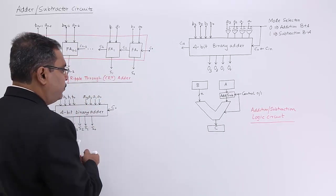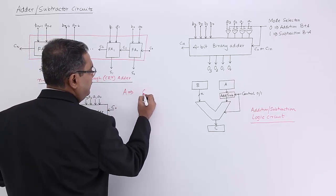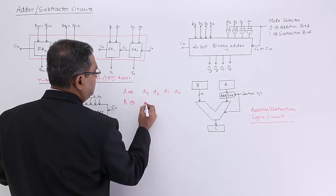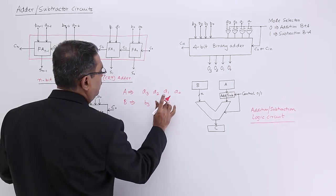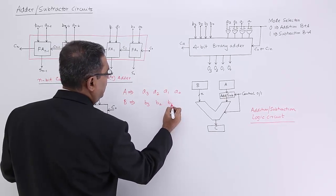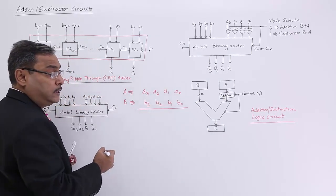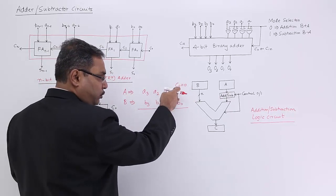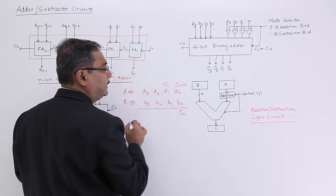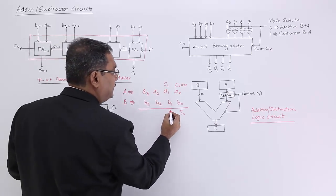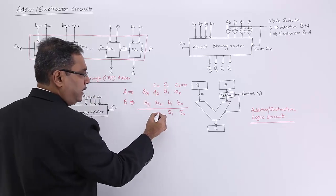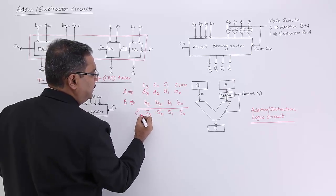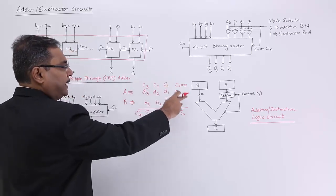As an example, let us suppose I am having one number A, which has four bits: A3, A2, A1, and A0. We are having another number B, which has B3, B2, B1, and B0. So I am going for addition. In that case, the initial carry C0 is equal to 0. Then I shall go for this addition and get the respective sum and the carry for the next column, and so on, until the carry for the next column becomes the MSB. In this way, the addition is taking place.